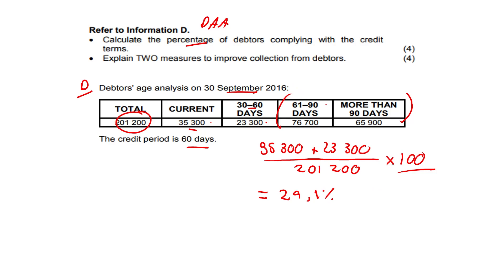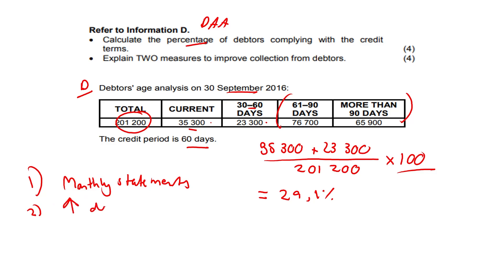Explain two measures to improve collection from debtors. Anything along these lines would score you the marks. We could send out monthly statements and email debtors on time so they know when they should be paying. We could offer higher discounts to encourage earlier payments, charge interest on overdue accounts, not sell to debtors already exceeding their credit limits, send SMS reminders, employ the services of an attorney or debt collector, or encourage debtors to pay by debit order.